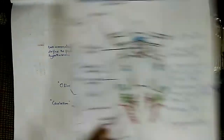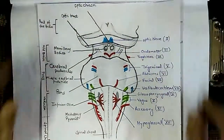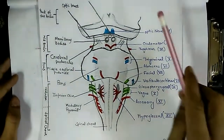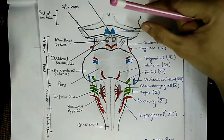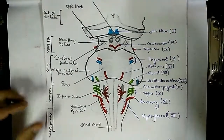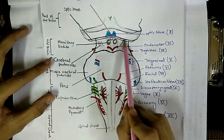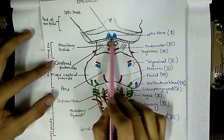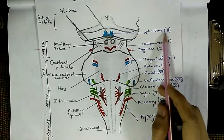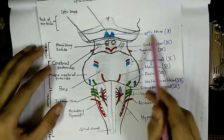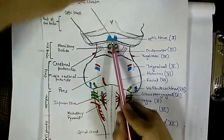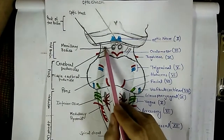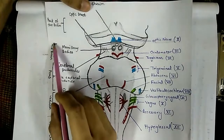Now we will discuss the actual origin of the cranial nerves. Looking at the posterior part of the forebrain, we can see the optic tract as a small slit, and just above it the optic chiasm where the optic nerve originates. Below that is the stalk for the pituitary, the paired mammillary bodies, the cerebral peduncles, and the beginning of the midbrain.